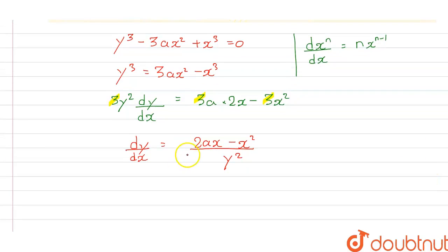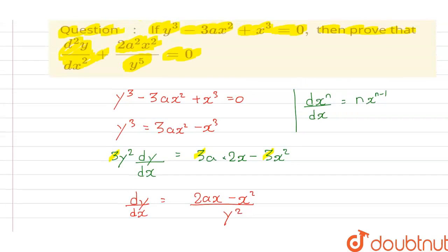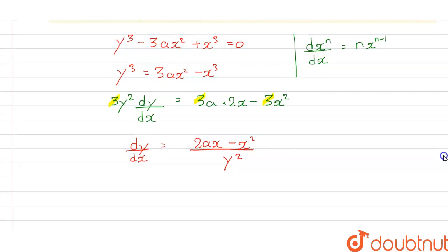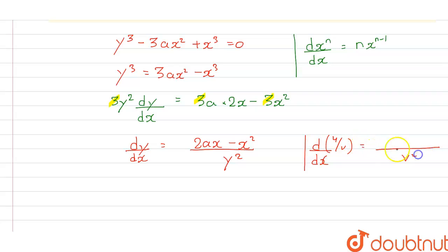Now we have a u/v rule here and we have to differentiate to find d²y/dx². The formula for d/dx of u/v is: v into u′ minus u into v′, all divided by v². Just apply this formula.